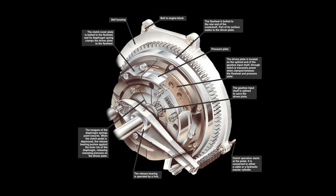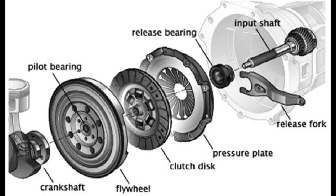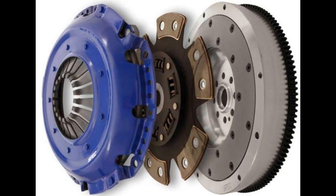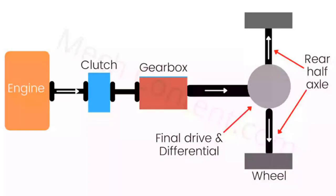In summary, a clutch is a critical component in a manual transmission system, allowing for smooth shifting and efficient power transfer between the engine and wheels.